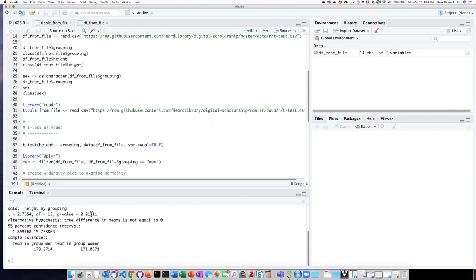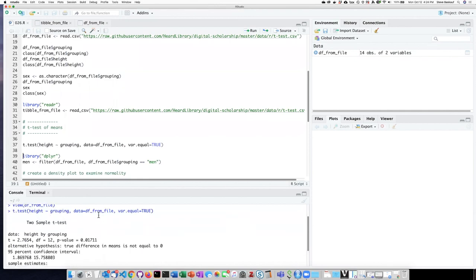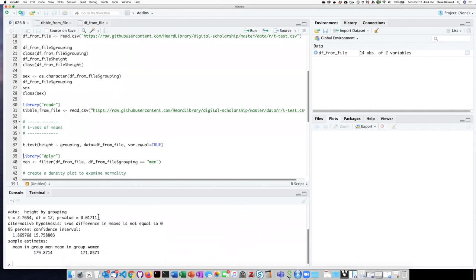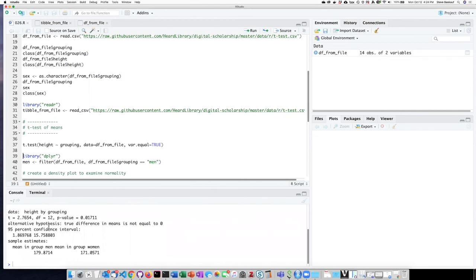When we run this in the console window, we can see that it's done a two-sample t-test. And there's a summary of a number of different things here. The value of t, the p-value, confidence intervals, and estimates of the mean. So let's break this down and see what some of these different things mean that we got as the outcome of the test.